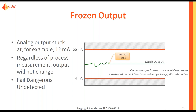First, you might have a frozen output. In this case, the analog output is stuck at, for example, 12 milliamps. Regardless of the process measurement, the output will not change, which means that your safety instrumented function cannot respond to a hazard. We call this failed dangerous undetected. In most cases, that is what it is going to be classified as. You will not know that there is a failure because it is not out of range, and it is not following the process value anymore. In some cases, if you have external comparison, this could be classified as a detected failure. However, in the SCRH, you are going to find these failures under failed dangerous undetected.